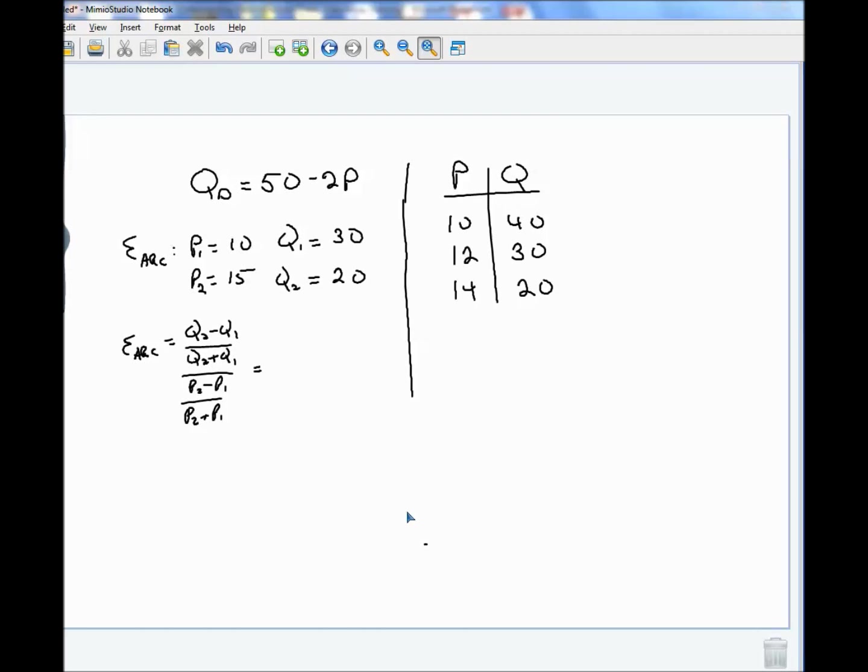And now it's just a simple matter of plugging them in. So it would be 20 minus 30 over 20 plus 30 all over 15 minus 10 over 15 plus 10. Sometimes students ask me, does it matter which one is P1 and which one is P2? No, it doesn't matter.